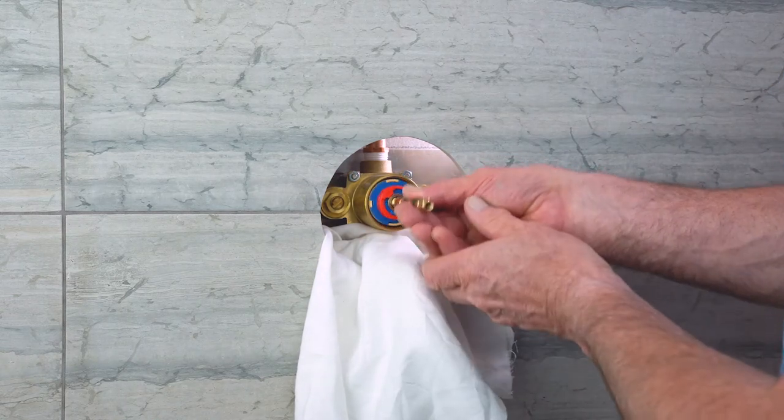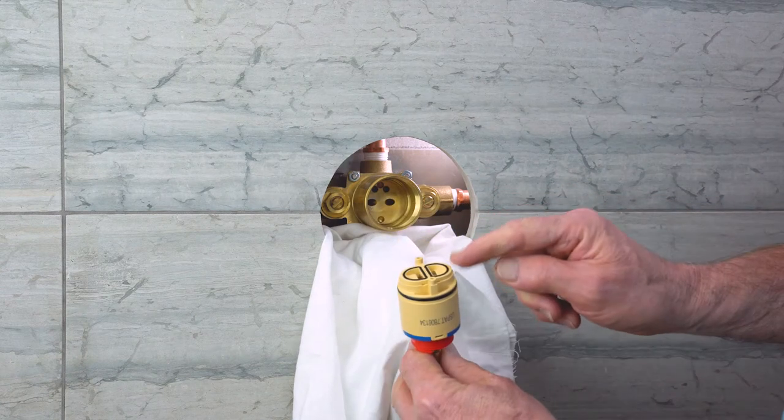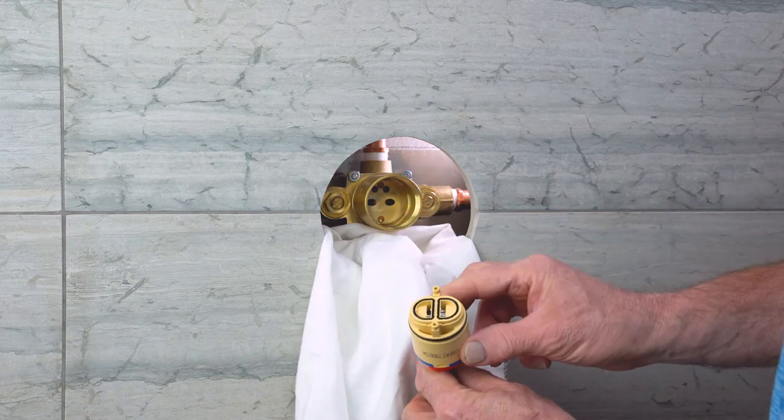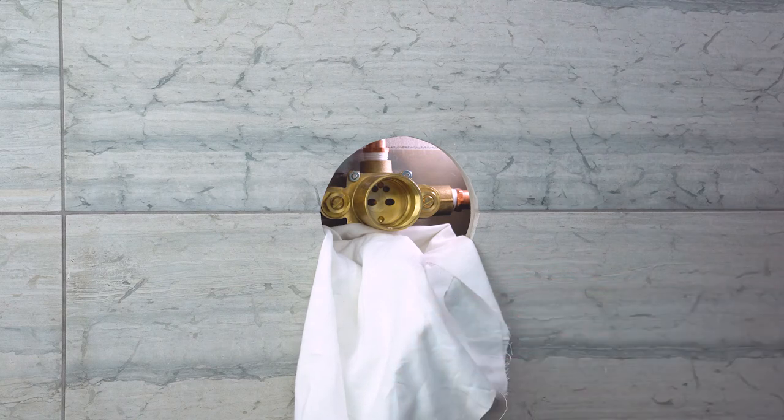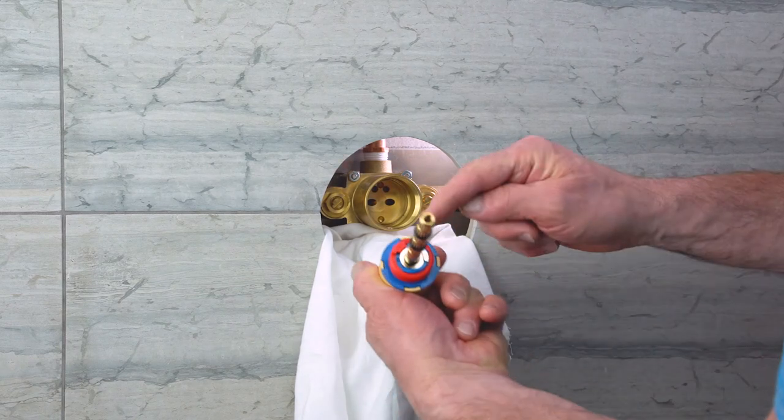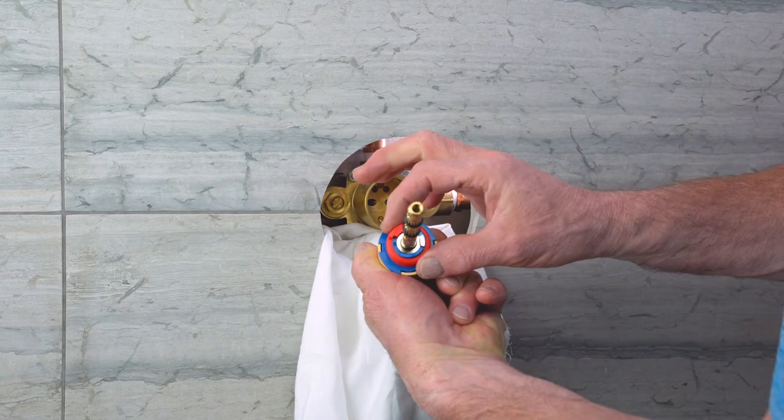Gently wiggle the cartridge and pull it out. Make sure no seals from the existing cartridge are still inside the body. Check the temperature limit stop, the red ring, and remember its position.